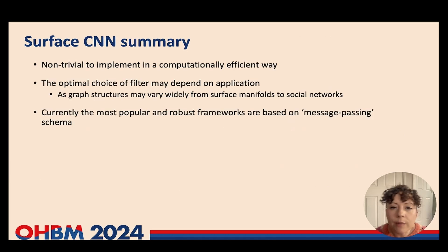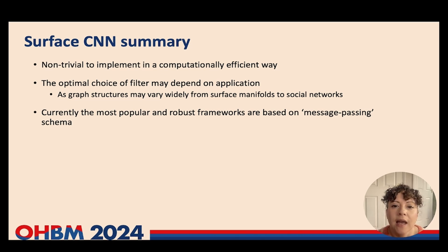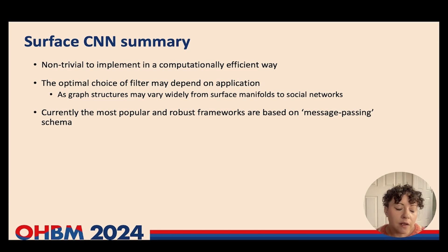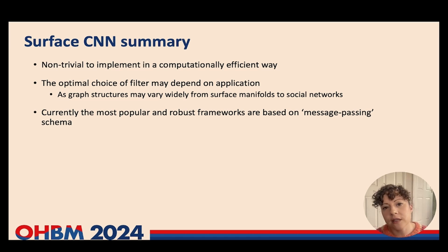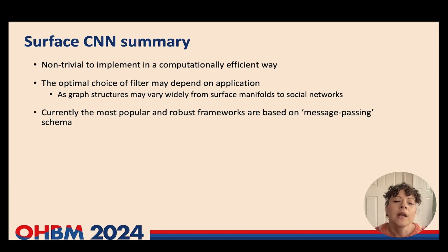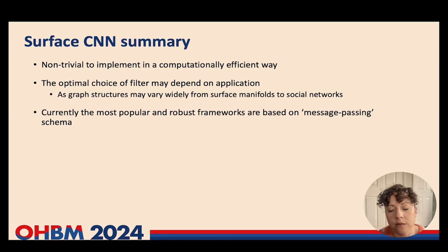In summary, implementing convolutions for surfaces isn't straightforward because it is not easy to implement them in a mathematically correct way that is computationally efficient. There are many different approaches because there are many different non-Euclidean domains — from modelling protein molecules to protein-protein interaction networks, social networks, financial networks, and shapes. You have to be careful to choose a framework that is suitable to your problem.